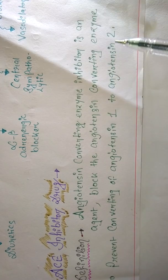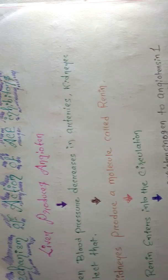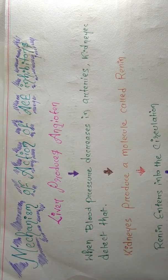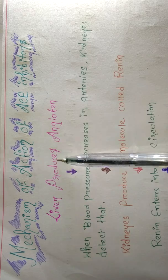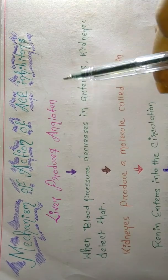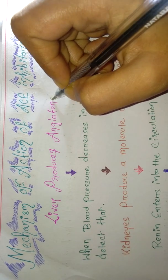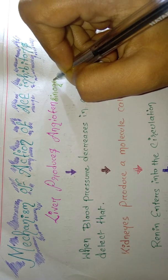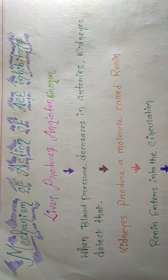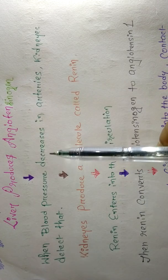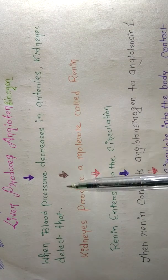Now let's see the mechanism of action — how this drug works. First, the liver produces angiotensinogen. The liver produces angiotensinogen.